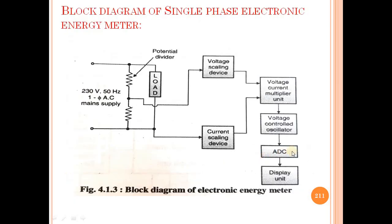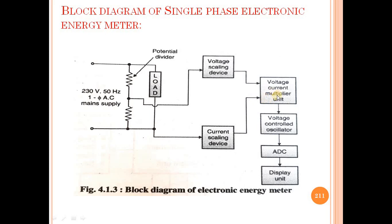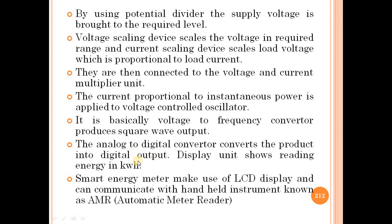The analog-to-digital converter converts the product of voltage and current into a digital output. The display unit then shows the reading in energy units — kilowatt-hours.